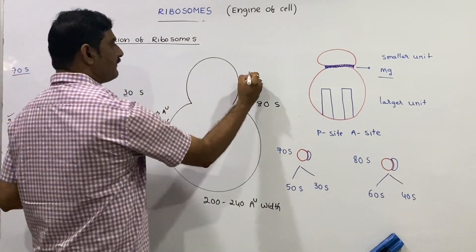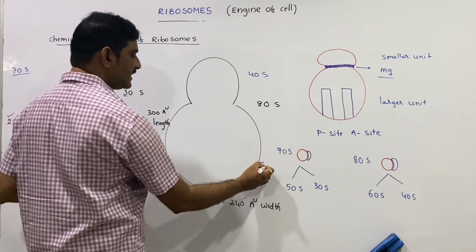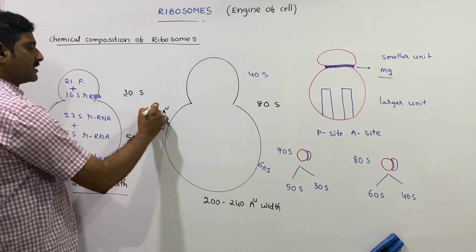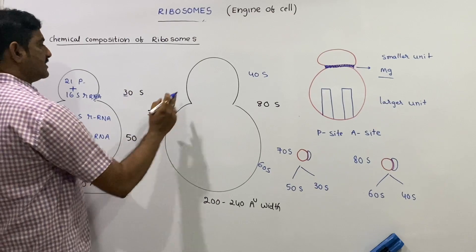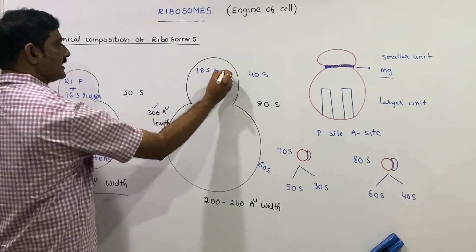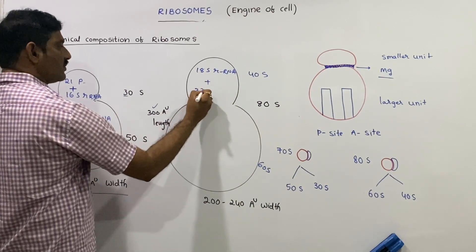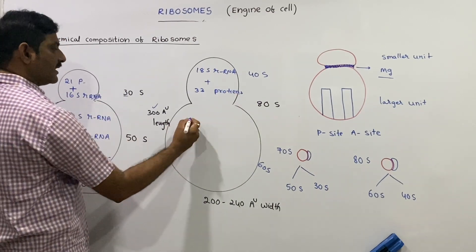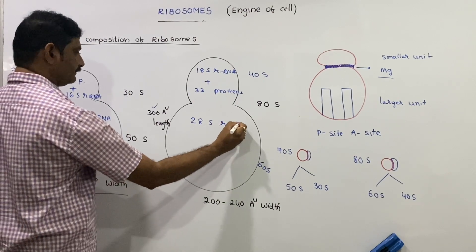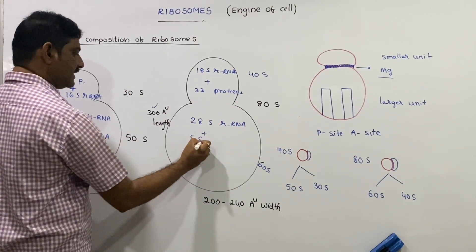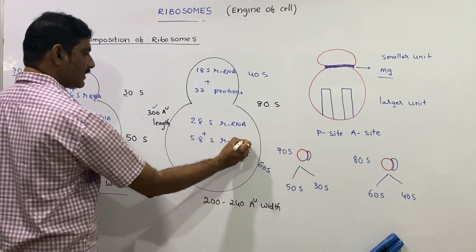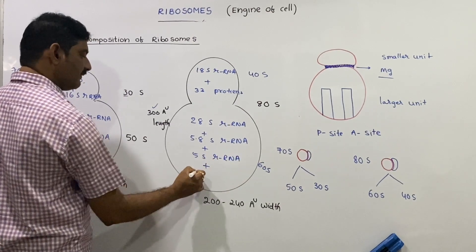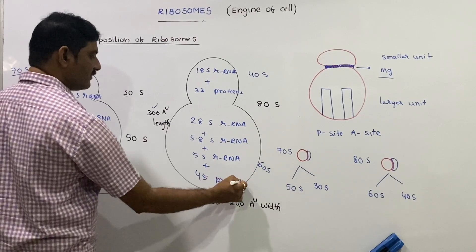For the 80S ribosome: the smaller unit is 40S and the larger unit is 60S. The 80S ribosome is 200–240 angstrom units wide and 300 angstrom units long. The 40S subunit is made up of 18S rRNA plus 33 proteins. The 60S subunit is made up of 28S rRNA, 5.8S rRNA, 5S rRNA, and 45 proteins.